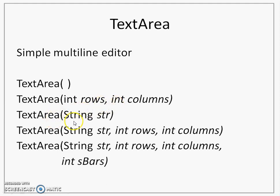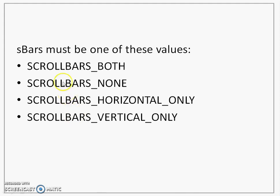There is also a constructor where a string is entered as a parameter to initialize and display the string in the text area. The next constructor is the combination — initializing string, number of rows, and number of columns. The last constructor is interesting: you have a string to be displayed, number of rows, number of columns, and you can also decide how scroll bars will be displayed. The possible values for scroll bars are: SCROLLBARS_BOTH (both vertical and horizontal visible), SCROLLBARS_NONE (neither visible), SCROLLBARS_HORIZONTAL_ONLY, and SCROLLBARS_VERTICAL_ONLY.